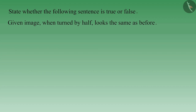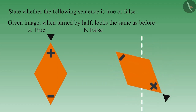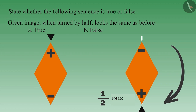State whether the following sentence is true or false: the given image looks the same as before when turned by half. If you consider this statement true, you must be thinking that on turning the image by half it looks like before. But you are not paying attention to the symbols on the image. If we turn the image by half, the position of the symbols will change. Therefore, on turning by half, this image does not look the same as before — this statement is false.